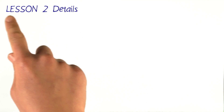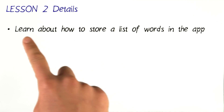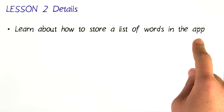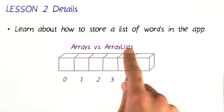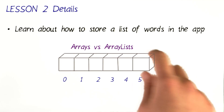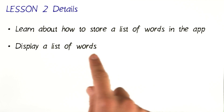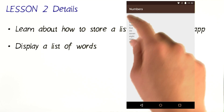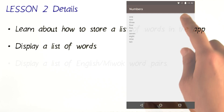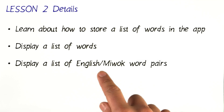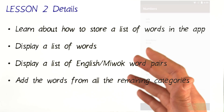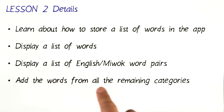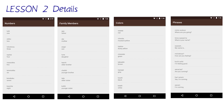Here are the details of what we're going to cover in lesson two. First, we're going to learn about how to store a list of words in the app, and we're going to talk about data structures such as arrays and array lists to help us store these words. Next, we'll learn how to display a list of words — here's an example of what that looks like in our numbers activity. Then, we'll go on to display a list of English and Miwok word pairs, and here's what that looks like in the numbers activity. And lastly, we'll get to add the words from all the remaining categories. Here's a sneak peek of what that looks like in all the activities.